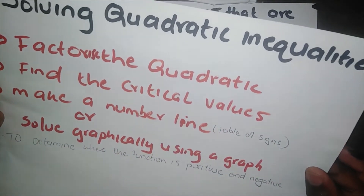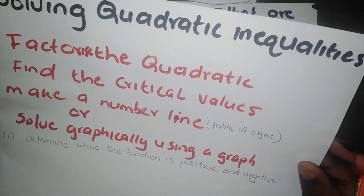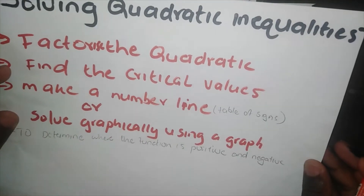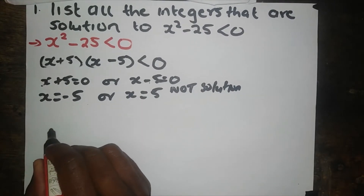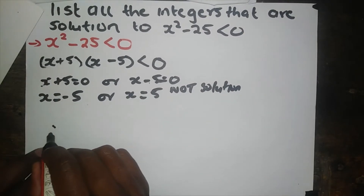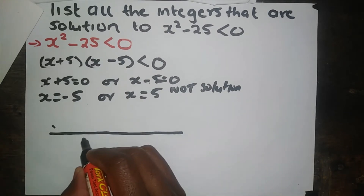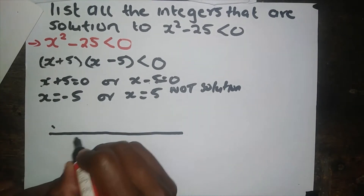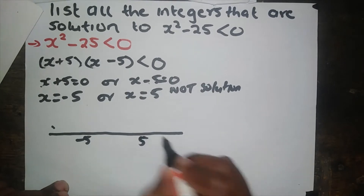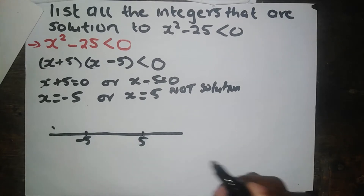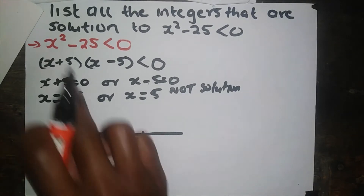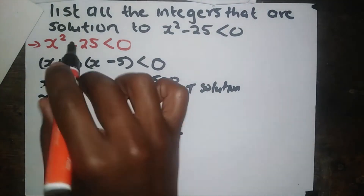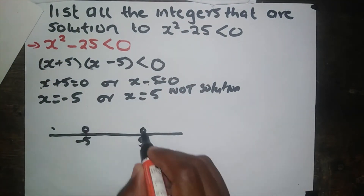Step number 3: we make a number line. This is very, very important, guys — I think this is what we need to focus on. So we draw the line, then you take your critical values, which are negative 5 and positive 5, and place them on the number line. These are the points where the inequality equals zero, because when you substitute 5 back to the equation, it gives you 0.